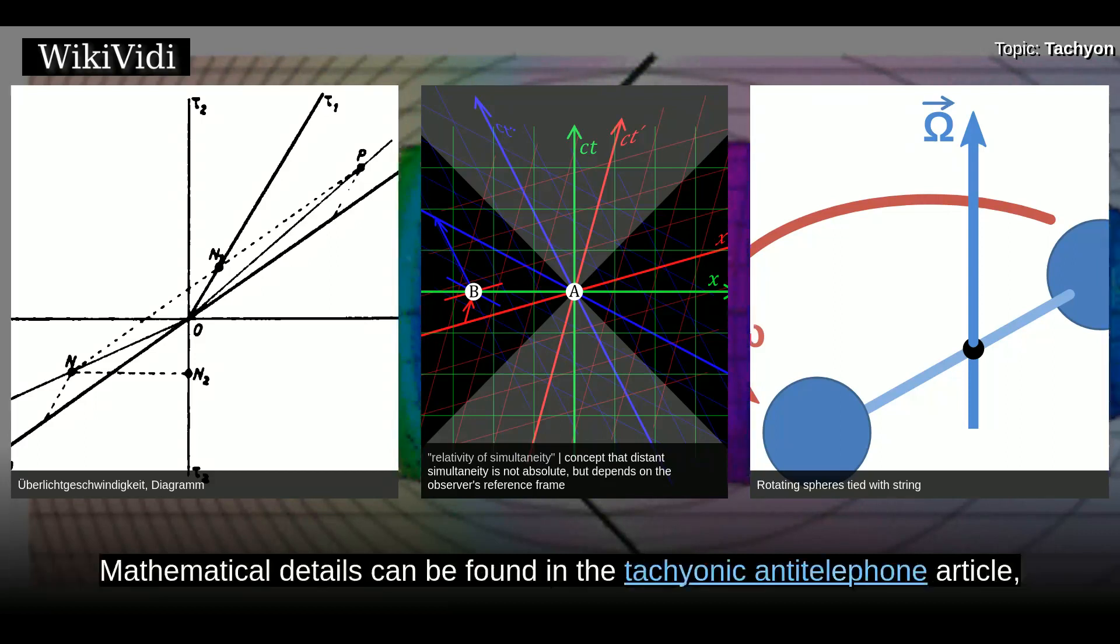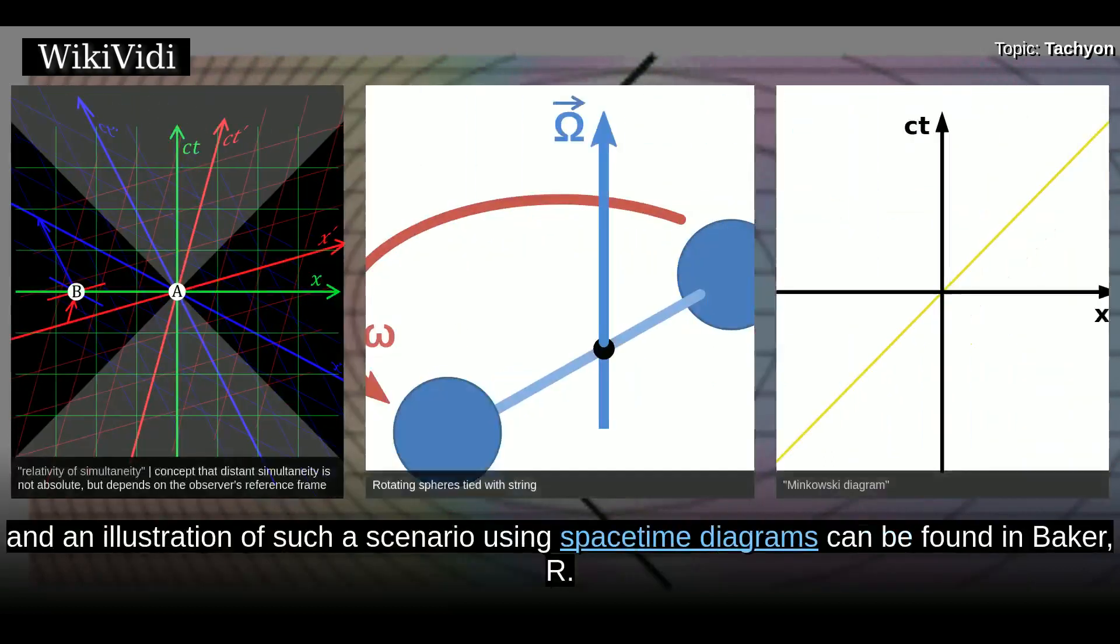Mathematical details can be found in the tachyonic anti-telephone article, and an illustration of such a scenario using spacetime diagrams can be found in Baker.